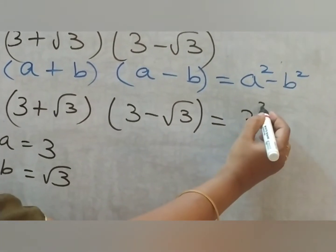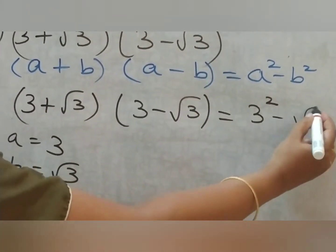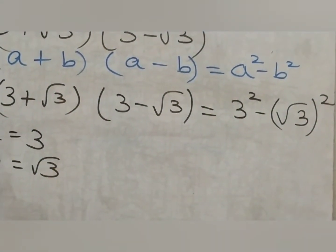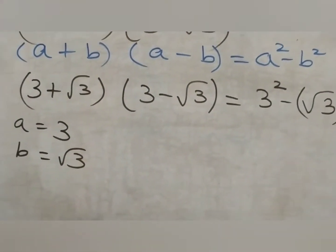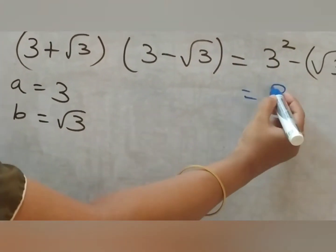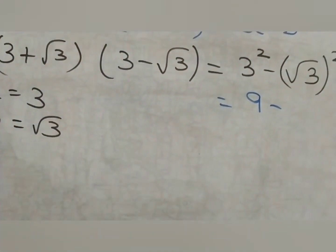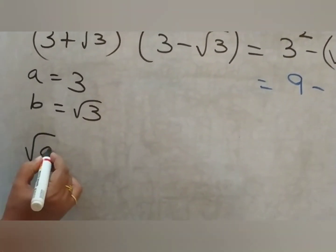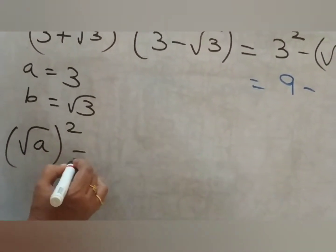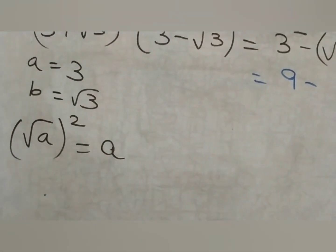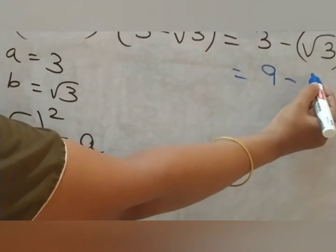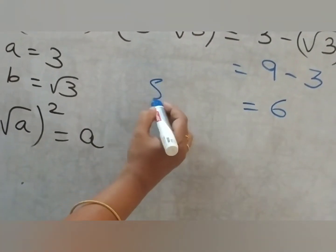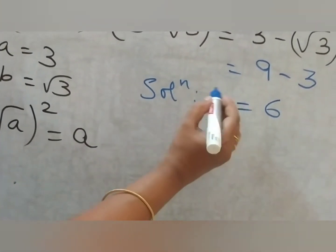So this will be a squared: 3 squared minus (√3)². What is 3 squared? 3 threes are 9. Minus (√3) the whole square. Children, you should remember: (√a)² is a itself. So what is (√3)²? It is 3 itself. So what is 9 minus 3? It is 6. The solution is 6.